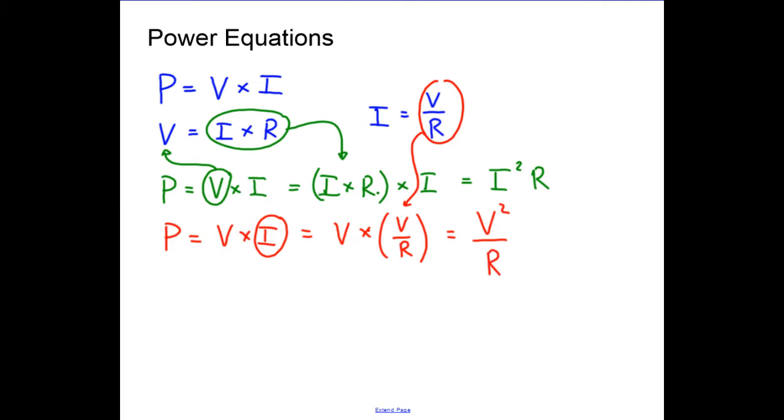So I've got two new equations for power: power equals I squared R for current flowing through a resistor, and power equals V squared over R when we know the potential difference across a resistor. Let's look at some problems.